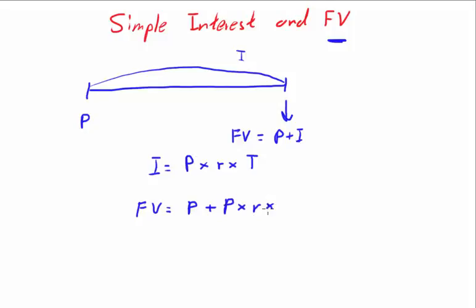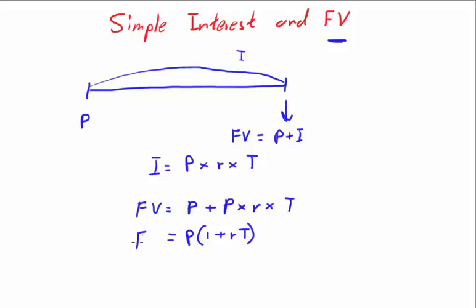You can see there's a P here and a P here, so let's factorize. P taken out leaves one from the first term, and RT from the second term. So your future value formula is: FV = P(1 + RT).